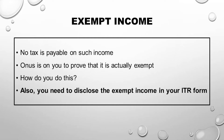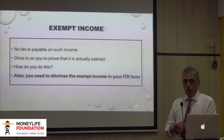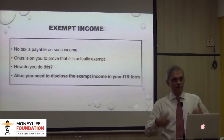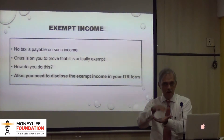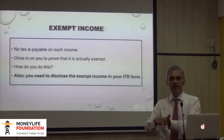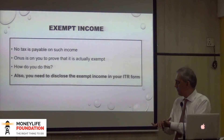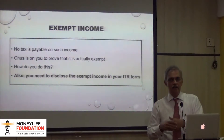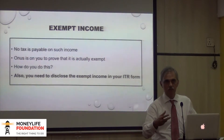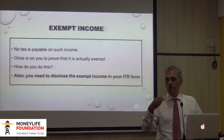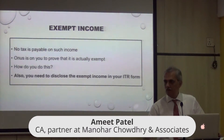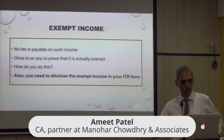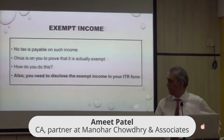We all know that exempt income is something on which we do not pay income tax. The onus is on us to prove that what we have earned is actually exempt from tax. The question that arises is: how do you prove that what you have got is actually dividend income, or long-term capital gains, or whatever it is?